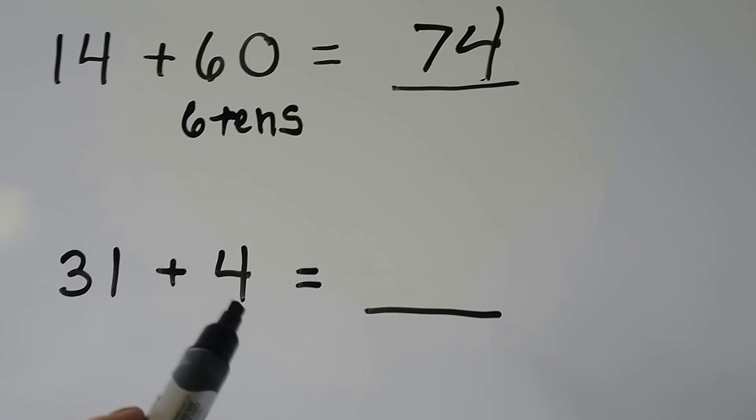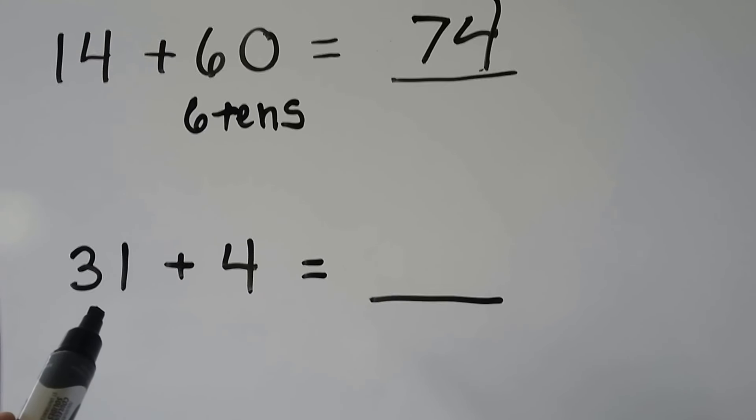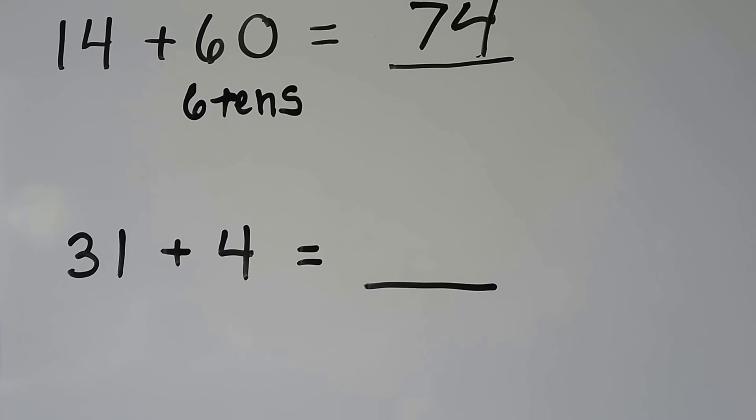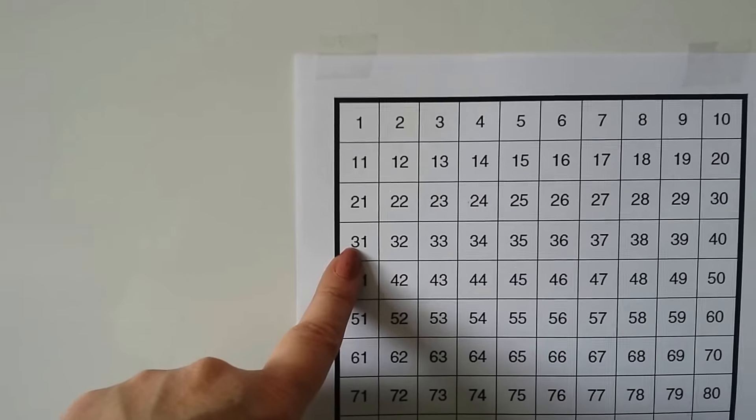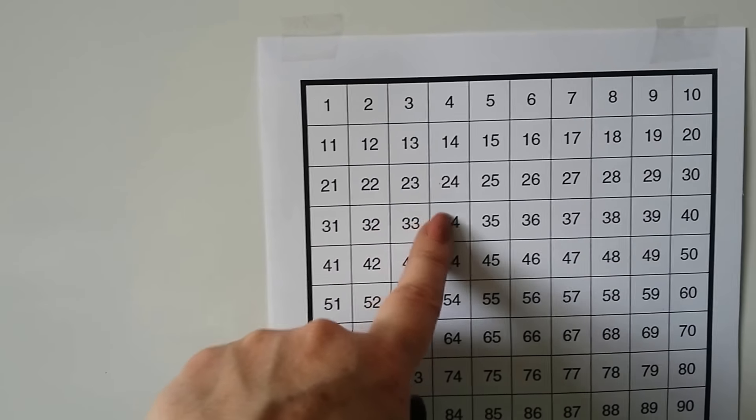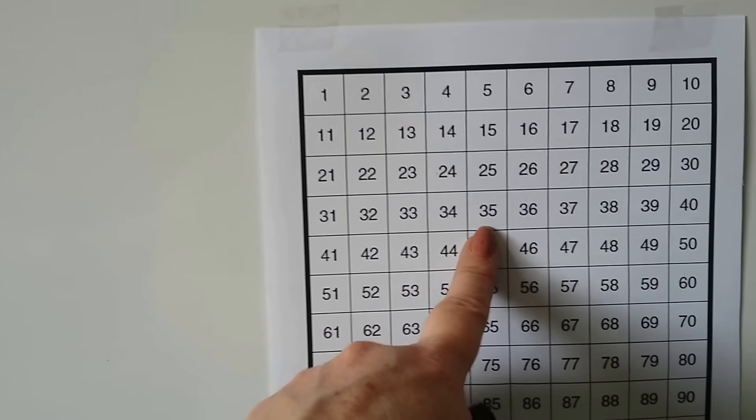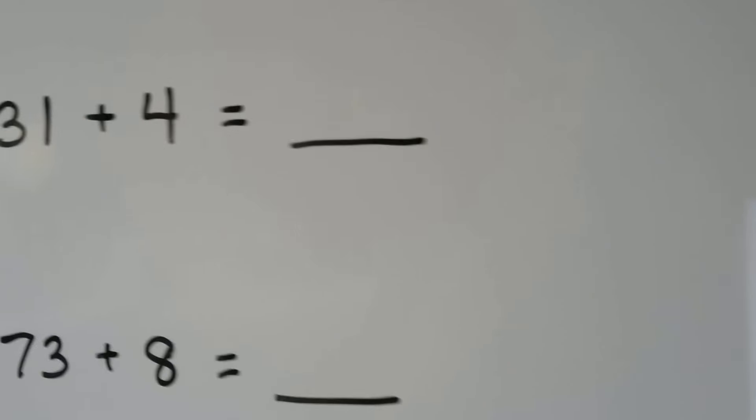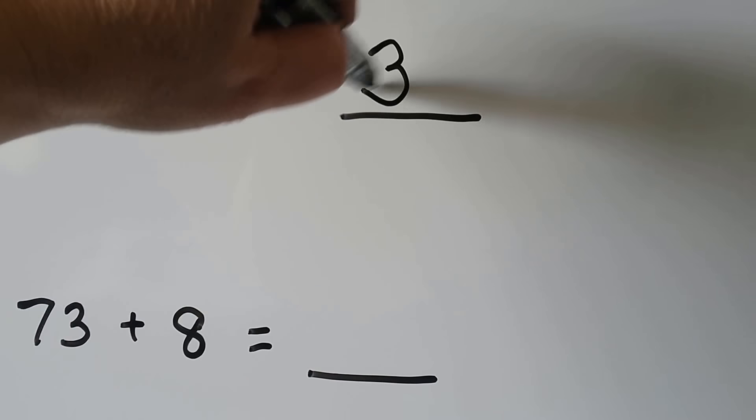31 plus 4, we start at the 31 and count the row squares 4 hops. We find 31. We're going to add 4. 1, 2, 3, 4. We land on 35. 31 plus 4 is equal to 35.